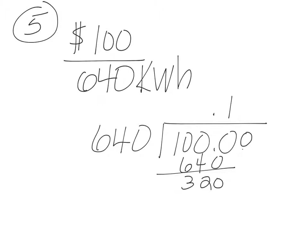I'm going to add another zero and bring it down. 640 goes into 3,200 five times. And off to the side, I can do my math. 640 times 5 and I get 3,200 here.